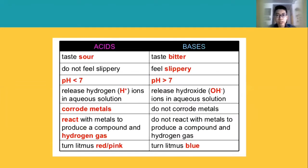Another short introduction regarding acid and base is the difference between acid and base on its properties. Acid tastes sour, while base tastes bitter. Acids do not feel slippery, while base feels slippery. Acid has a pH lower than 7, while base has a pH higher than 7. Acids release hydrogen ions in aqueous solution, while base releases hydroxide ions in aqueous solution.